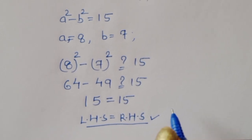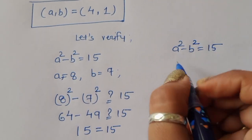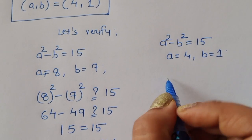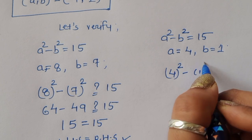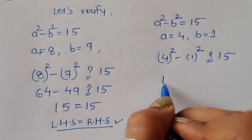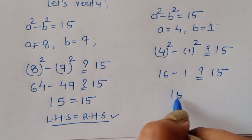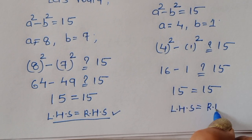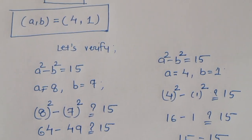Now taking the second pair, A equals 4 and B equals 1: A squared minus B squared gives 4 squared minus 1 squared, which is 16 minus 1, equal to 15. So here also LHS equals RHS. Therefore the values of A and B are (8, 7) and (4, 1). This is the correct solution for this equation. Thank you.